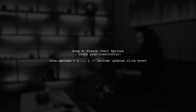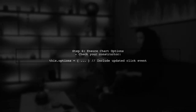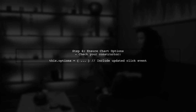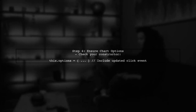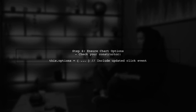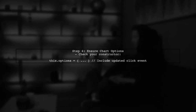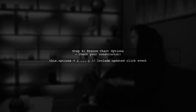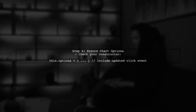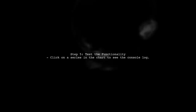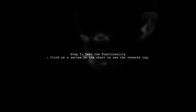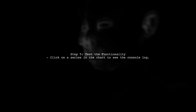Finally, ensure that your chart options are correctly set up in the constructor of your component. This will allow the chart to render with the updated click functionality. Now, when you click on a series in the High Charts chart, it will call the methodToCall method in your Angular component.